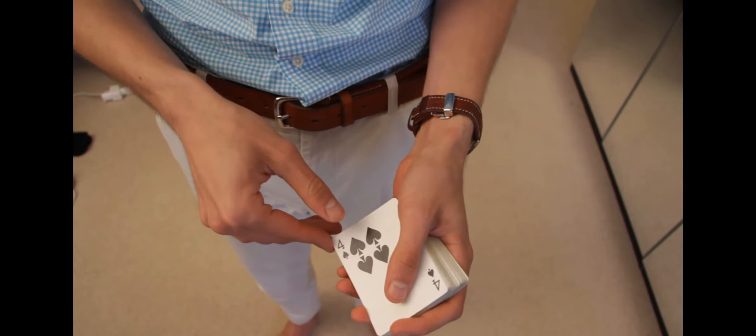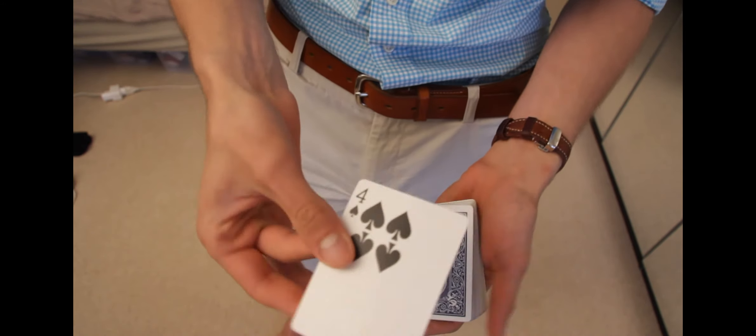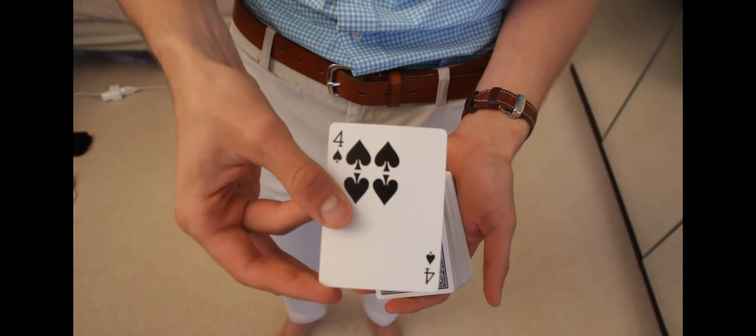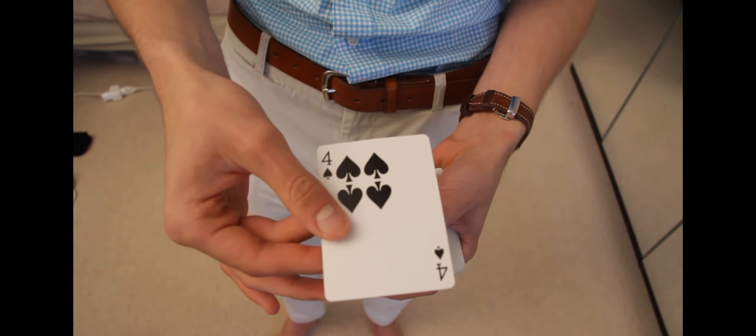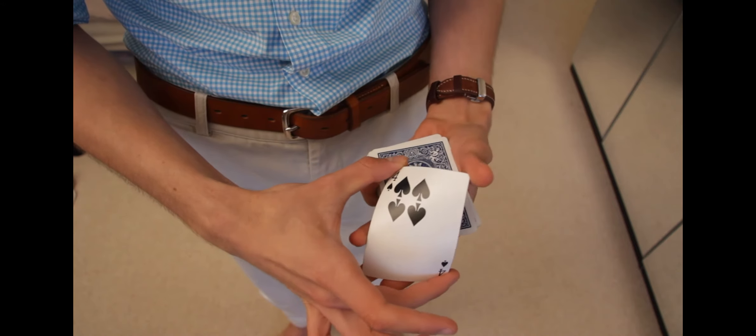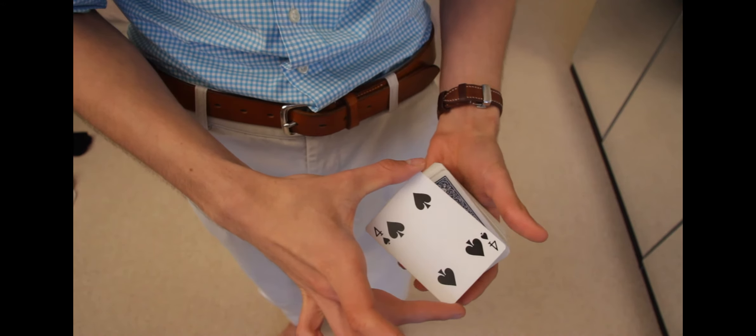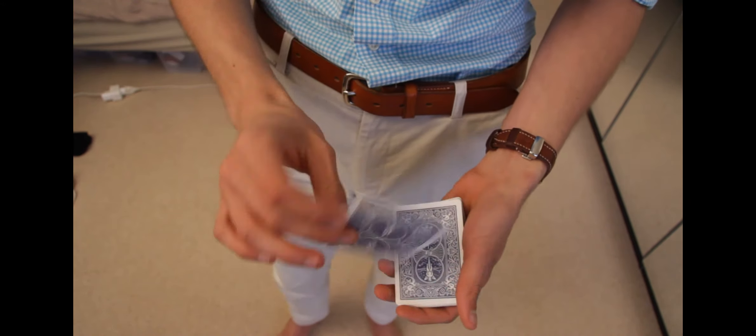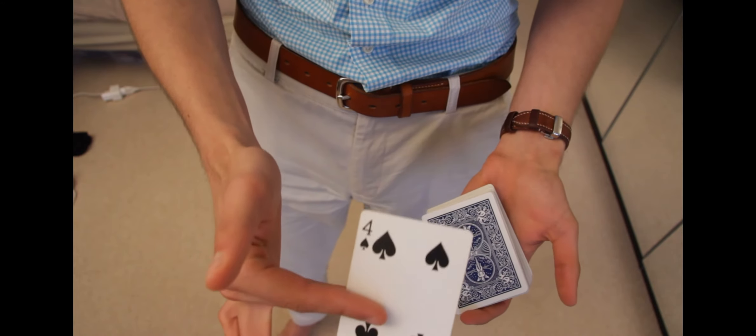See that? That's all four pips in one corner now. If that's not the weirdest thing you've ever seen, I don't know what is. I mean, it's so weird, right? Of course, we can't leave the card like that. We've got to do something about it. So watch, just like that. Now all four pips are back where they belong. And that's today's trick.